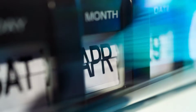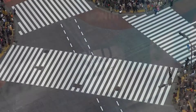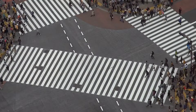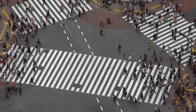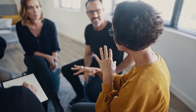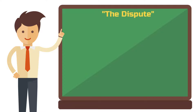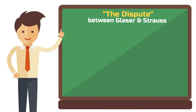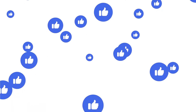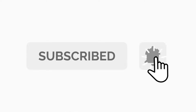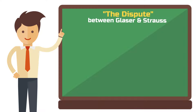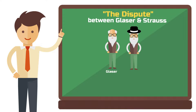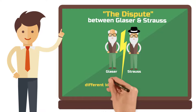Since Glaser and Strauss first described grounded theory, a lot has happened. Nowadays there are several variations and different opinions on how grounded theory should be conducted. The fact that so many versions of grounded theory exist today is mainly related to two individuals — Glaser and Strauss themselves. Before we get to the big dispute between Glaser and Strauss that started this development — it sounds a bit like a soap opera — the two authors grew significantly apart over time, mainly due to their different ideas about how to conduct the grounded theory approach.